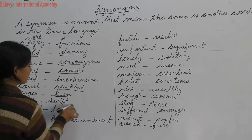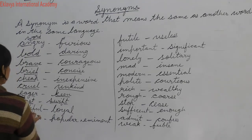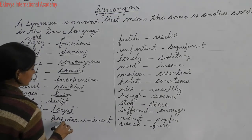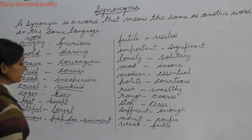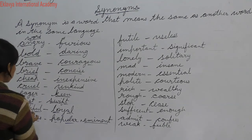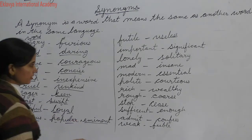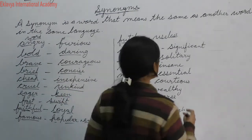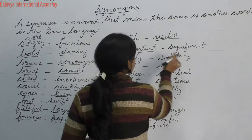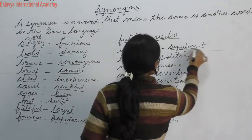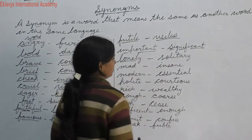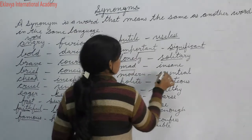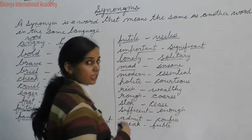Fast means teiz and swift also means teiz — so fast and swift are synonyms. Faithful means wafadar, and loyal also means wafadar. Famous, popular, and eminent are all synonyms. Futile means virth — useless. Important and significant are synonyms.